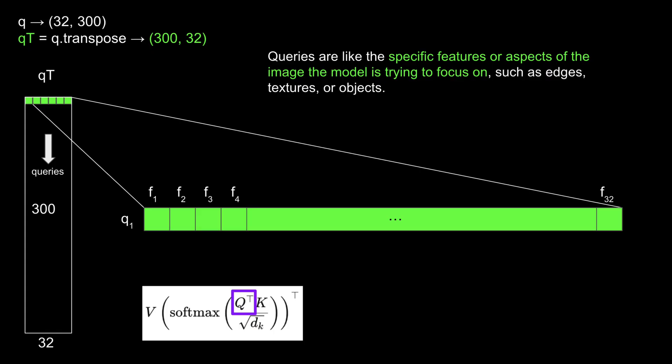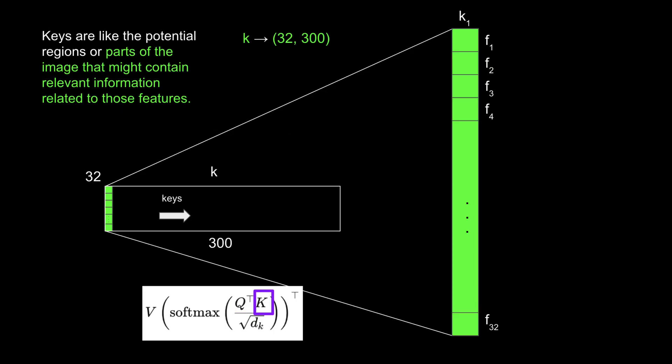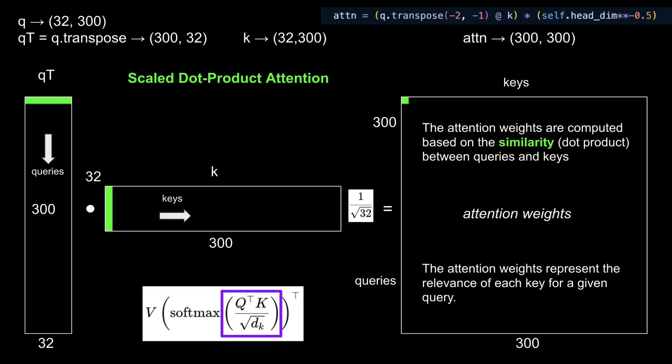First, we transpose the queries to a 300 by 32 shape to enable matrix multiplication. Notice that the queries are arranged top to bottom, with each query containing its 32 features. Queries represent the specific features the model is trying to focus on, like edges, textures, or objects. Keys represent potential regions or parts of the image that might contain relevant information for those features. When we compute the dot product, or matrix multiplication, between the queries and keys, the result is the attention matrix, which captures the similarity between them. You can think of attention weights as a measure of how relevant each key is to a given query.